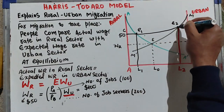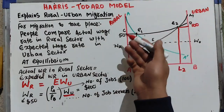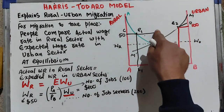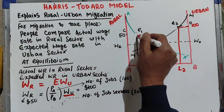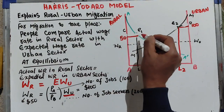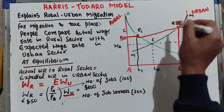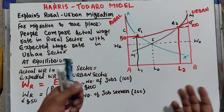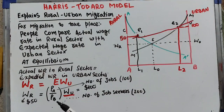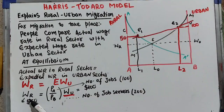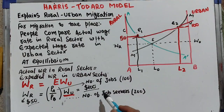Joining E1 and E2 gives us our equilibrium curve. At this point, the actual wage in the rural sector ($50) equals the expected wage in the urban sector. The expected wage in the urban sector is $100 times the probability of getting a job: with 100 jobs and 200 job seekers, the probability is 0.5, so expected wage = $100 × 0.5 = $50.